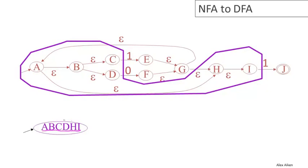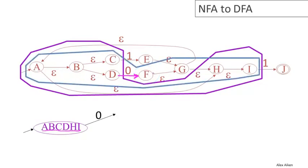Let's do input zero first. Looking at the purple set, there's only one possible transition: from state D to state F. So state F is included in the reachable states. But once we get to state F, there are many epsilon moves, so the second DFA state is the epsilon closure of F, which is the set {F, G, H, I, A, B, C, D}. This is the set of possible states that the NFA could be in after reading a single zero.